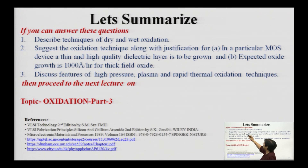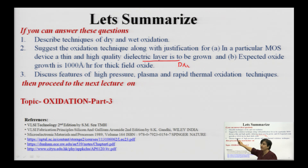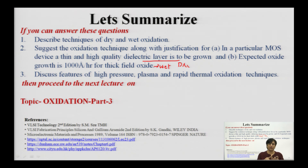To summarize this lecture: we have studied wet and dry oxidation techniques, and specialized techniques including plasma oxidation — where plasma is created by DC or RF discharge, oxidizing species flow over silicon, and oxidation occurs at lower temperatures — and rapid thermal oxidation. By the end of this lecture, you should be able to describe at least one technique each of dry and wet oxidation, suggest the appropriate oxidation technique with justification for a given MOS device, and describe the features of plasma and rapid thermal oxidation. Thank you, God bless and good luck.